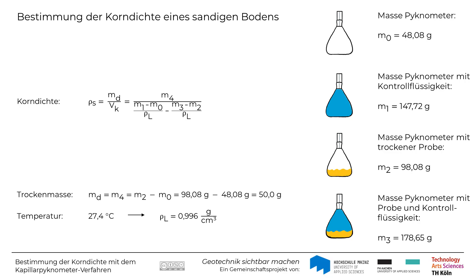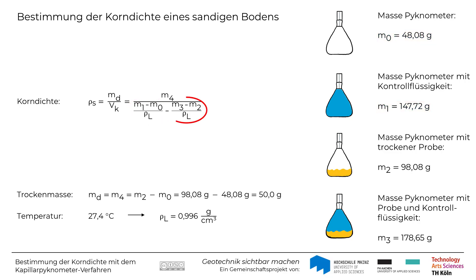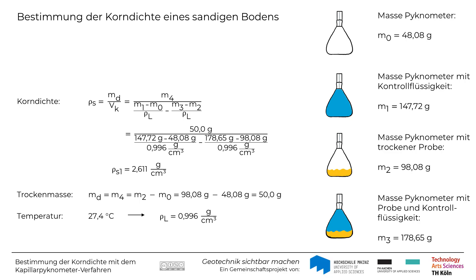Das Volumen der Körner Vk ergibt sich aus zwei Termen unter dem Bruchstrich. Mit dem ersten Term wird das Gesamtvolumen des Pygnometers über die Formel M1 minus M0 durch Rho-L ermittelt. Mit dem zweiten Term das Volumen, das bei Füllung des Pygnometers mit Flüssigkeit und Bodenprobe von der Flüssigkeit eingenommen wird, aus M3 minus M2 durch Rho-L. Mit diesen Werten und Rho-L bei 27,4 Grad Celsius ergibt sich eine Korndichte Rho-S von 2,611 g pro Kubikzentimeter.